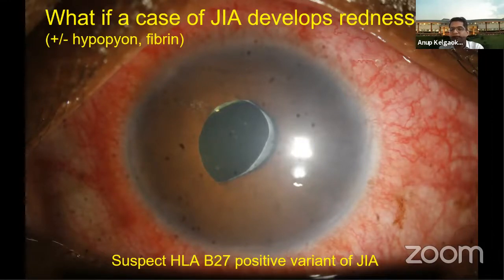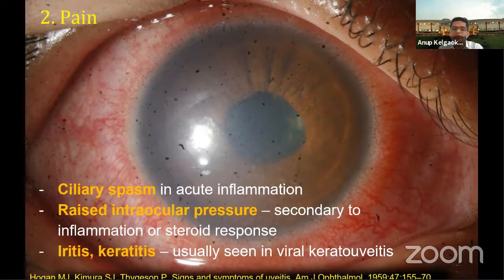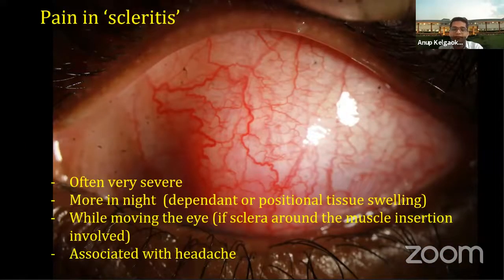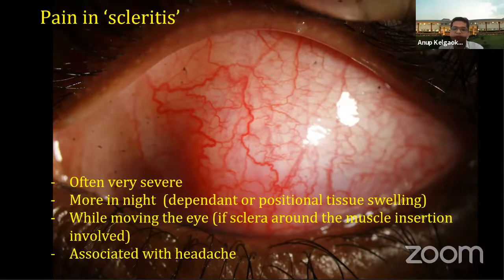JIA is mostly a white-eye uveitis, but a red eye can be seen in the enthesitis-associated JIA or the HLA-B27-positive variant. Coming to the second symptom of pain, ciliary spasm, raised intraocular tension, iritis, and keratitis are the causes. This pain is often referred to and around the eye and can be periocular, sometimes with associated headache. Pain in scleritis, however, is very severe — a patient may walk into the clinic holding a palm around their eyes with pain as the first complaint. This pain can be worse at night due to positional tissue swelling, and if scleritis involves muscle insertion, pain may occur during eyeball movement.